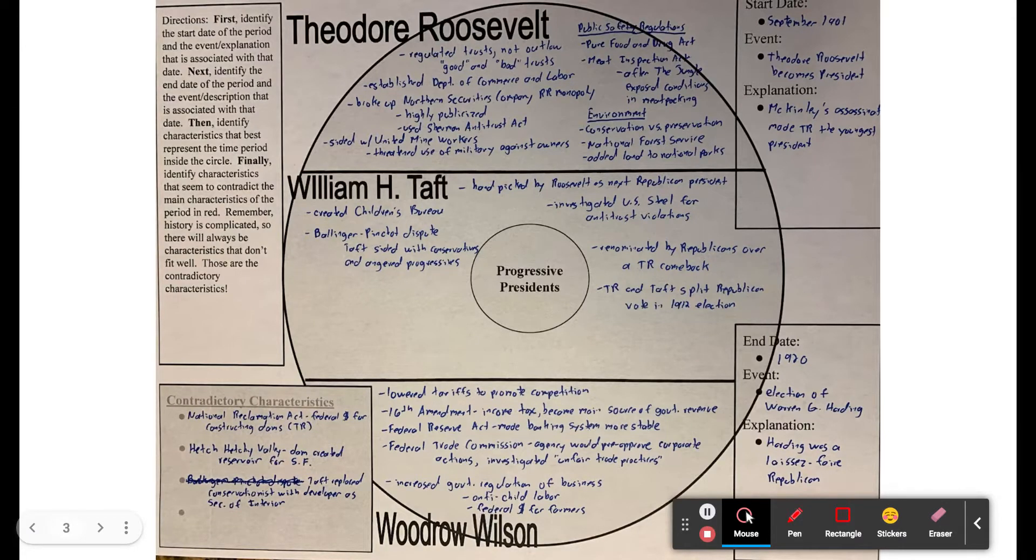The Hetch Hetchy Valley, which is up by Northern California, there was a dam that was created, this created a reservoir for water for San Francisco. So basically there was a fight between environmentalists who wanted to preserve the Hetch Hetchy Valley and the residents of San Francisco that wanted water for the city. Eventually, after a big fight, the reservoir won out and the valley was filled in. Taft also replaced a conservationist with a developer as secretary of the interior, so again he's siding with developers and business over the environmental movement. So there were some contradictory characteristics. It wasn't completely progressive, but as we can see in this time period, there's a lot of progressive things happening. This progressive era ends, you can argue, in 1920 with the election of Warren G. Harding. He's going to be the first of three Republican laissez-faire presidents of the 1920s.